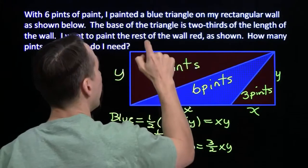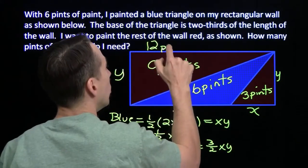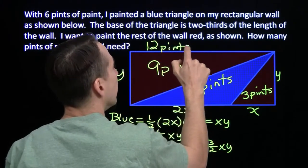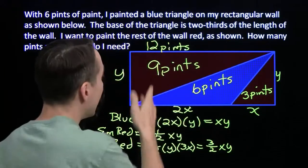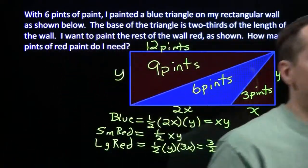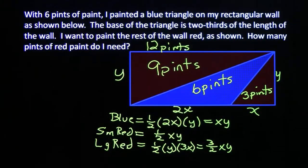So in total, I need 3 plus 9. I need 12 pints of red paint. And I'm done. And I'm going to go get some paint. Hey, wait a second.